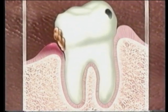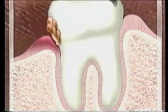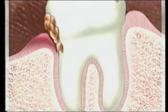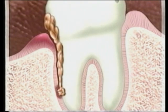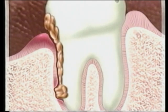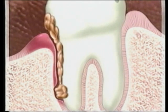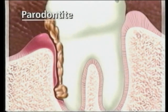If we do not intervene, the situation runs the risk of deterioration. Therefore, these bacteria, living without oxygen, penetrate under the gums and form a pocket of infection. As a result, bacteria attack the tooth, the bone, and the gingiva at the same time. The gums will gradually recede. This is periodontitis.